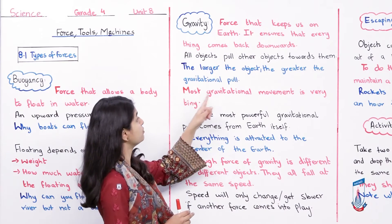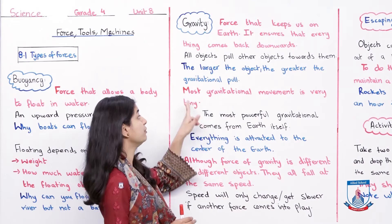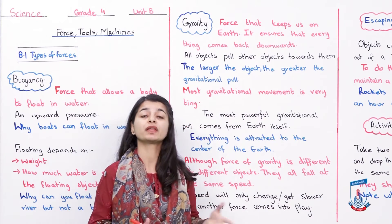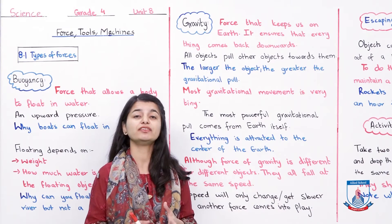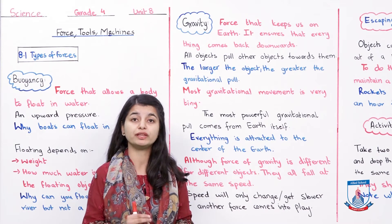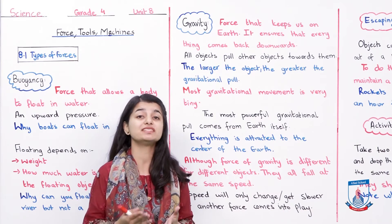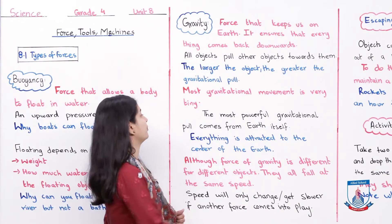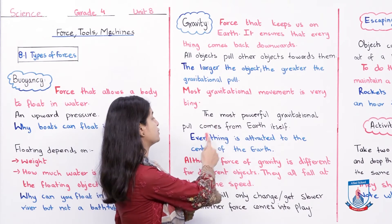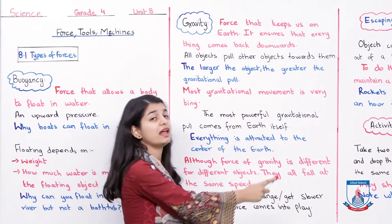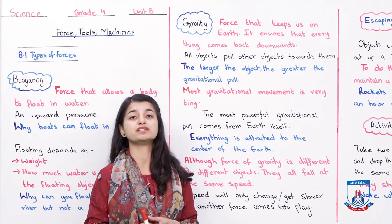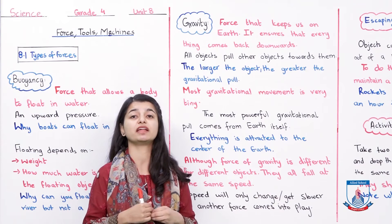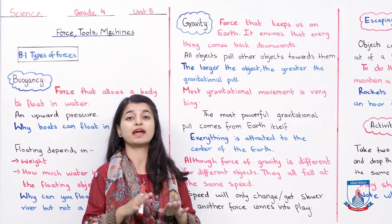The larger the object, the greater the gravitational pull. Most gravitational movement between everyday objects is very tiny, which is why you cannot see or feel it. The most powerful gravitational pull comes from Earth itself. That is why we are attracted to the center of the Earth — that is why we are attracted to the ground.